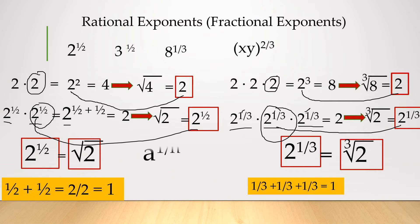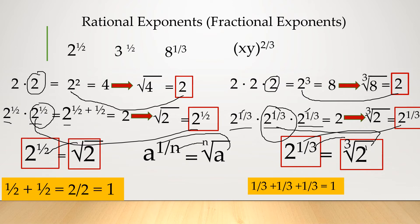That's the pattern. In general, if we have a raised to 1 over n, it means that is the nth root of a. The denominator n is the index, and the numerator 1 is the exponent of the radicand inside.